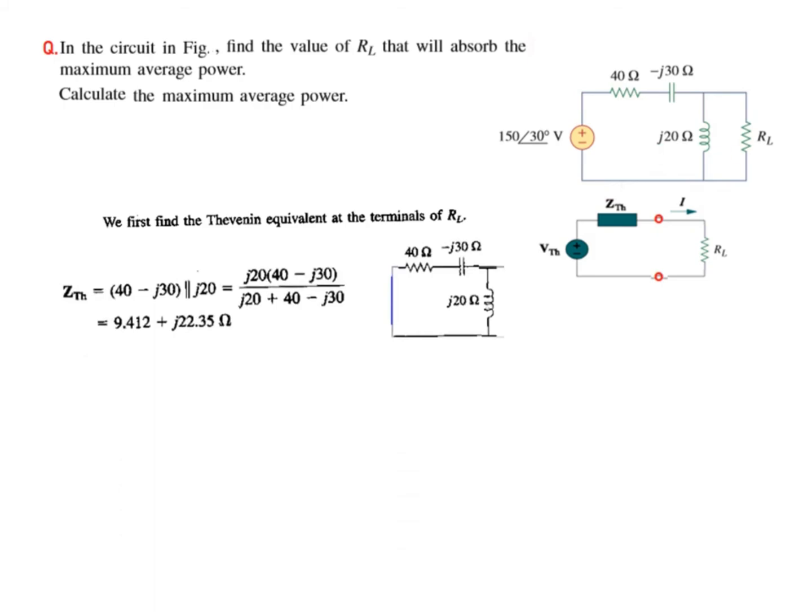Separating the load and making the voltage source zero, we are looking from here. j20 comes in parallel with this, so we solve for Z_Thevenin: 40 minus j30 in parallel with j20. Solving, we find it to be 9.412 plus j22.35 ohms.